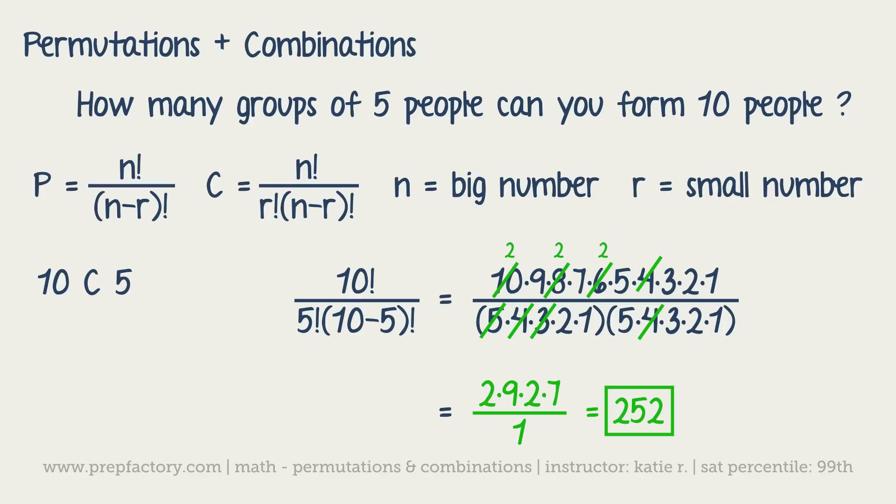So notice that's a pretty good amount of options for groups of five people. Combinations and permutations a lot of times are going to give you pretty large answers given pretty small inputs.